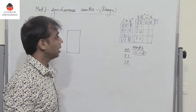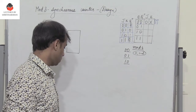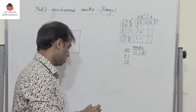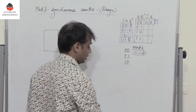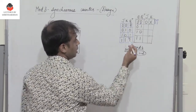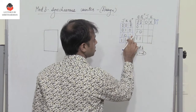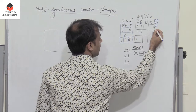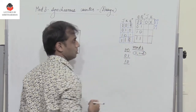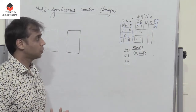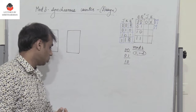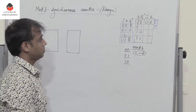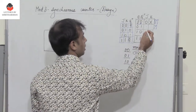Next, if I need a change from 0 to 1 — meaning the output has to be set — the two possible options are: when I have 1 0, or when I have 1 1. With 1 1 the output toggles from 0 to 1. So J and K would be 1 X.